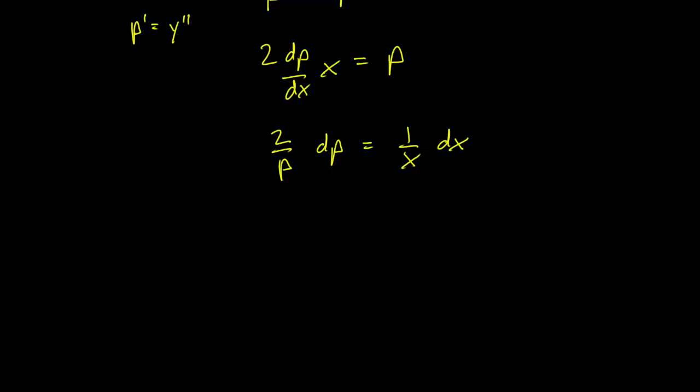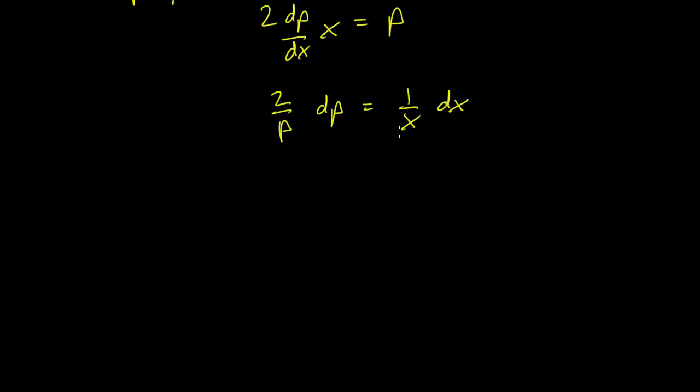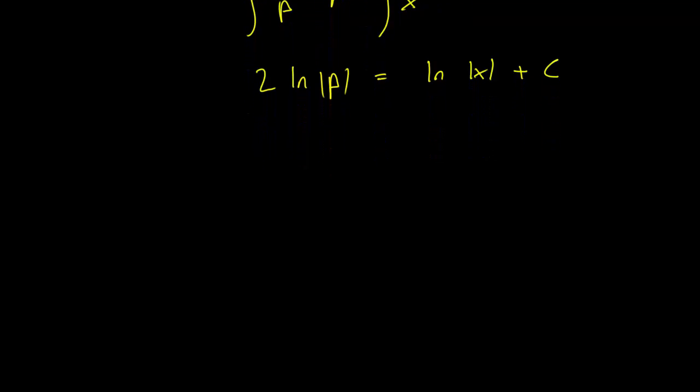And this is going to be integrating both sides. We're going to have 2 log p equals log x plus c. The way to get past this is to take the exponential of both sides. So we write the exponential e to the 2 log of p equals e to the log x plus c. This is just going to be p squared equals x times e to the c.